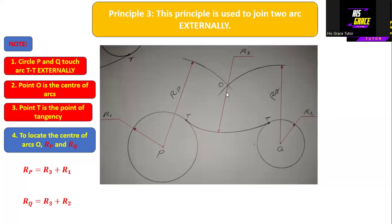Once we have the values of rP and rQ, we can locate center O. We take the value of rP on the compass, position the pinpoint at center P, and draw an arc. Then we take the value of rQ, position the pinpoint at point Q, and draw another arc. These two arcs intersect at point O, the center of the arc. We then take the value of r3, place the pinpoint at O, and draw the arc.